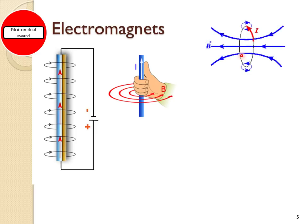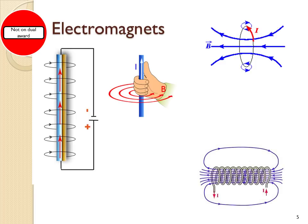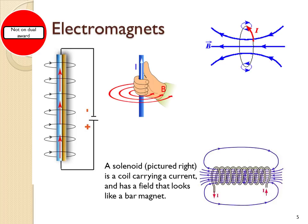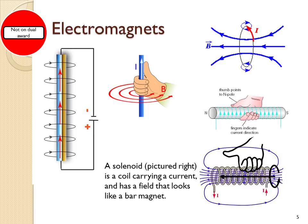If you wrap a wire in a coil, then you get a field that looks like this. And if you spread out a coil into this shape called a solenoid, you end up with a field that looks a little like a bar magnet. Notice in the middle of the field, the field lines are straight and evenly spaced — that gives a uniform region of magnetic field. Again, the right-hand grip rule can be used: the thumb points in the direction of the magnetic field lines through the centre of the coil, and the fingers wrap around in the direction of conventional current.